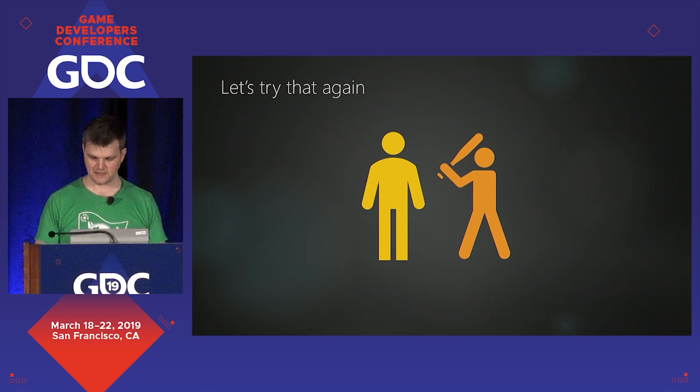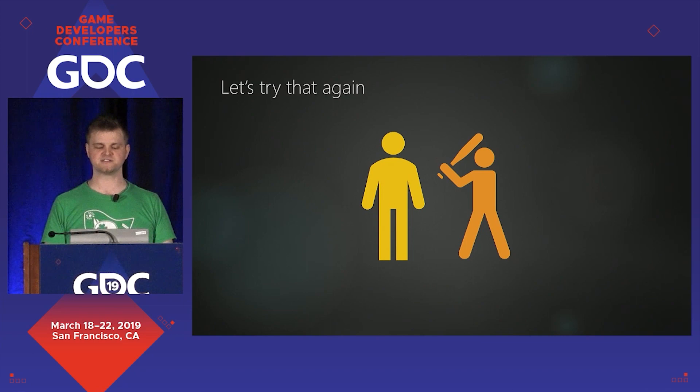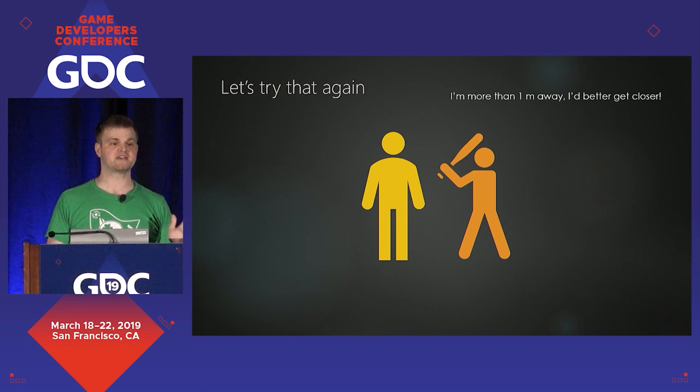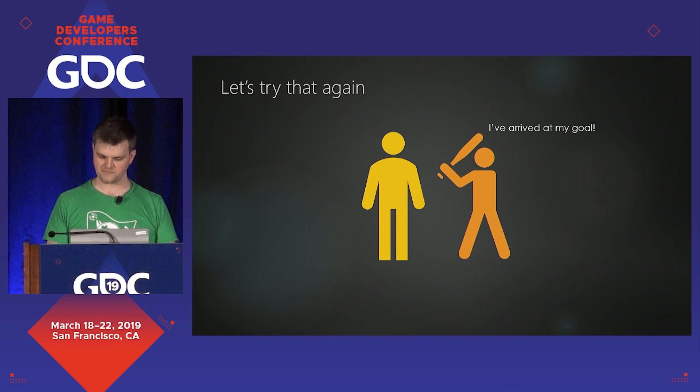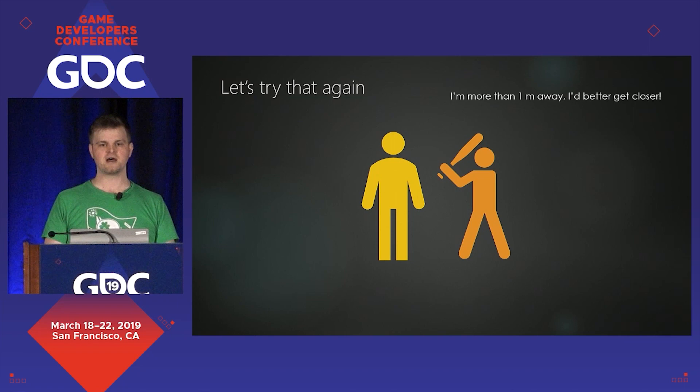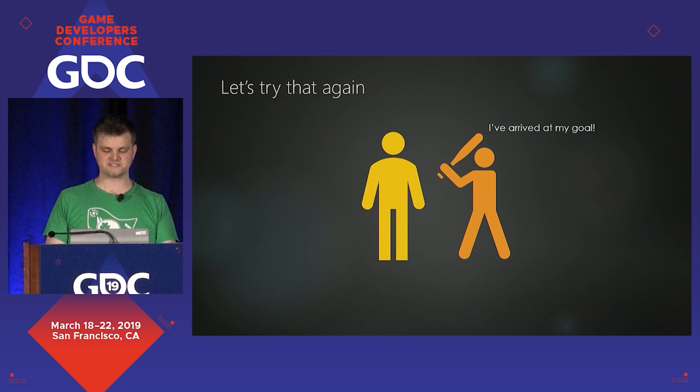Let's try that bug again. You've got a character that wants to be one meter away. It does its calculation and says, 'I'm slightly more than one meter away, I'd better get closer.' So it asks the navigation system to take it to a place exactly one meter from the player. The navigation system does its own calculations and says, 'good news, you've arrived.' Then the combat system, the following frame, redoes its calculation and says, 'I'm 1.002 meters away, I'd better get closer.' And from the player's point of view, the character is just sitting there twitching.